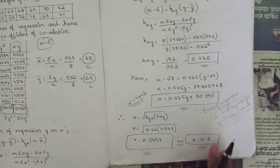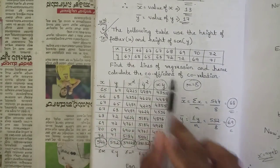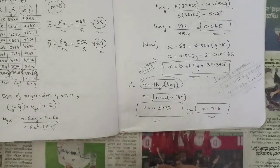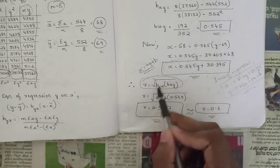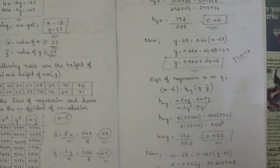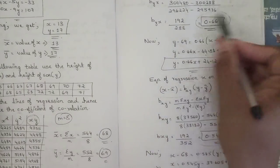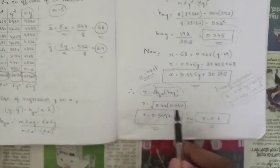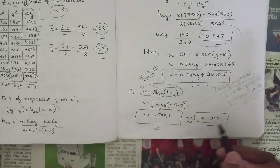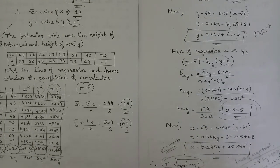The question also asks to find the coefficient of correlation from the regression lines. The formula is r = √(byx × bxy). Substituting byx = 0.66 and bxy = 0.545: r = √(0.66 × 0.545) = 0.5997, which we can approximate as 0.6.